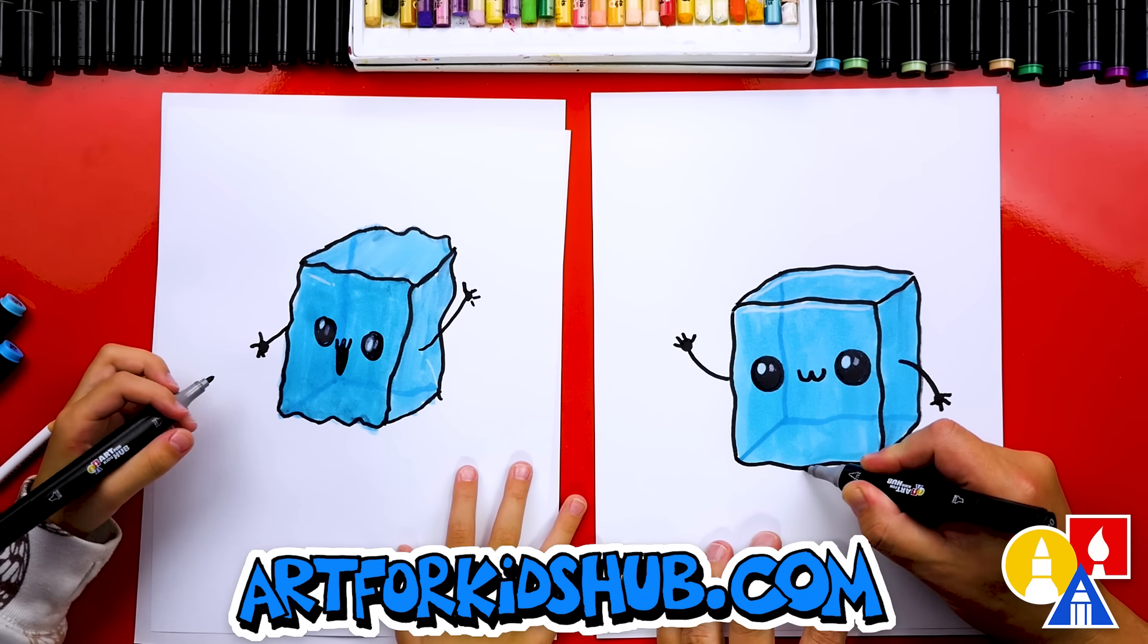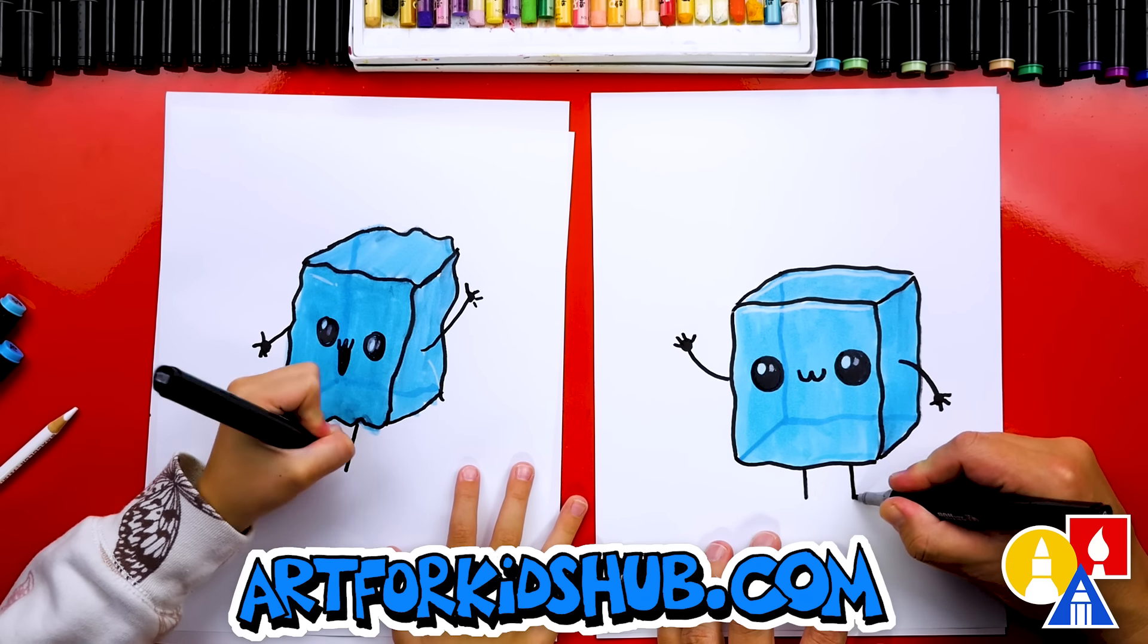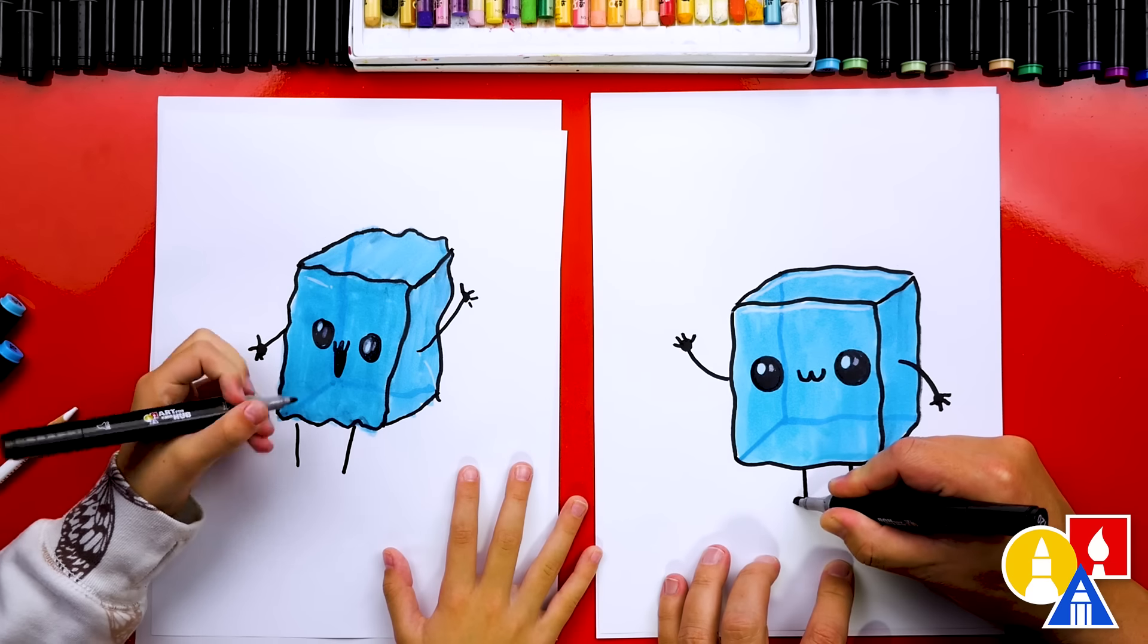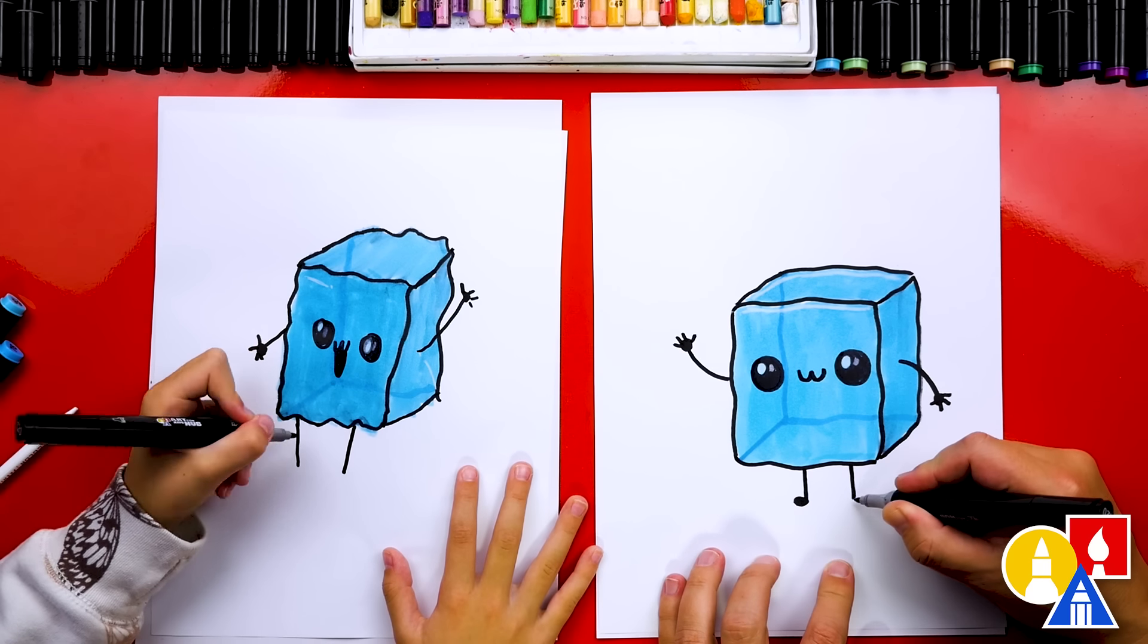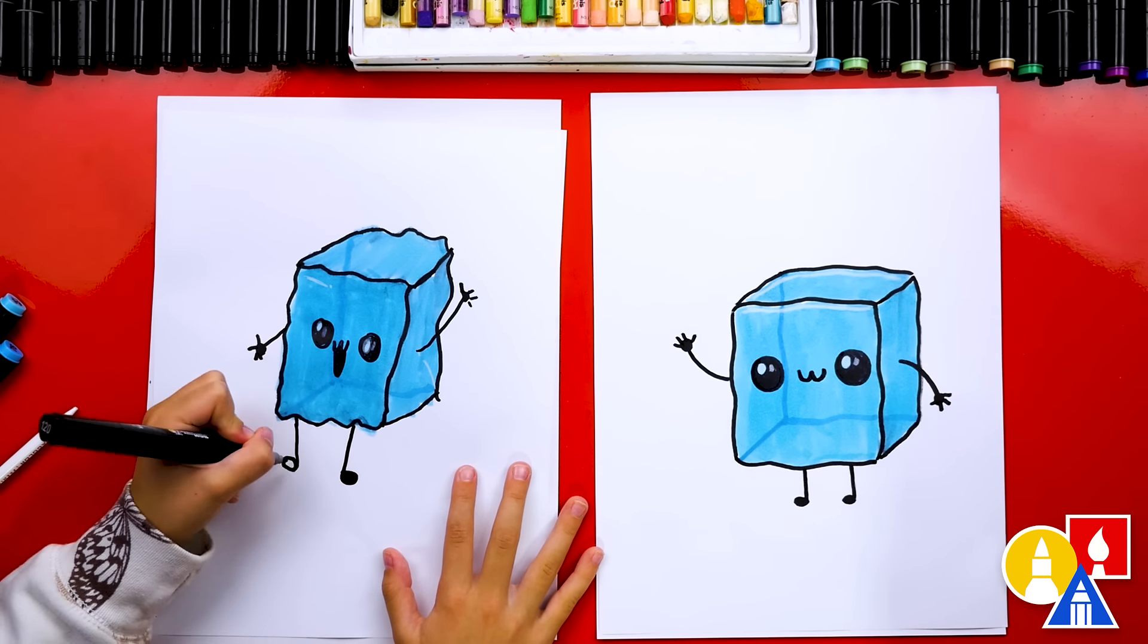And then one last thing. Let's add two legs. And feet. I'm going to draw a little oval sticking out to the left. And we did it.